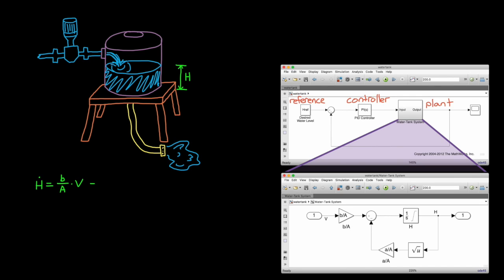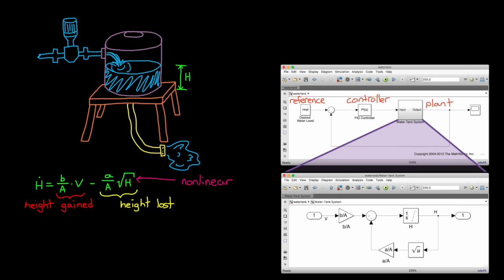And from this, we can write out a differential equation for the system. The parameters A, B, and capital A are specific parameters of the tank. And they represent constants related to the flow rate into and out of the tank and the cross-sectional area. So what we have is that the change in height of the water equals the amount of height gained by the water entering the tank minus the height lost by water leaving. And the amount lost is proportional to the square root of the water height. And this square root makes it a nonlinear system. So, at this point, we could linearize this model and fit it to the form x dot equals ax plus bu.